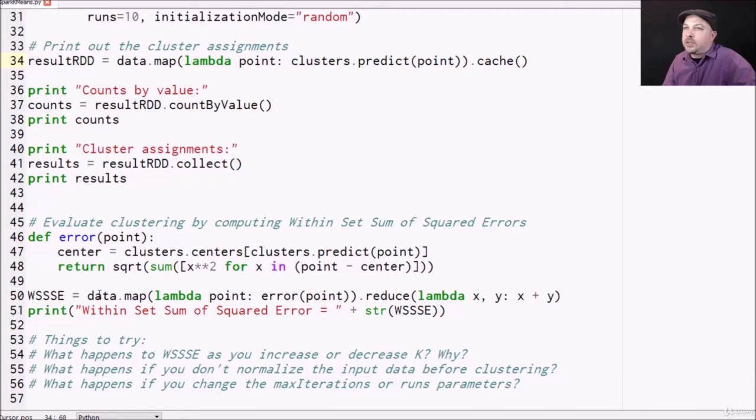So to do that, we are taking our source data, calling that Lambda function on it that actually computes the error from each centroid center point. And then we can chain different operations together here.